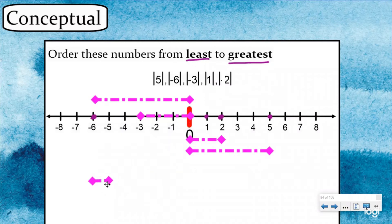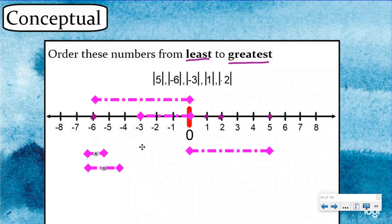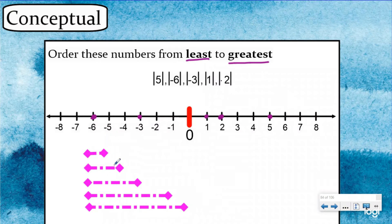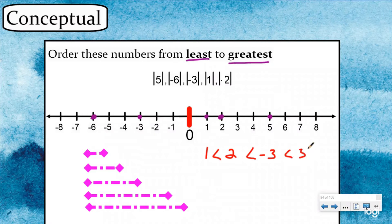The smallest one would be one, then two would be my next smallest. Then I would have negative three's absolute value, then five, and then negative six would be my longest one. So when you're comparing the absolute value, or the distance away from zero, you can visually see that one has the smallest absolute value. So the order is: one is less than two, which is less than negative three, which is less than five, which is less than negative six. You're not comparing what the numbers are worth — you're comparing how far away from zero they are.